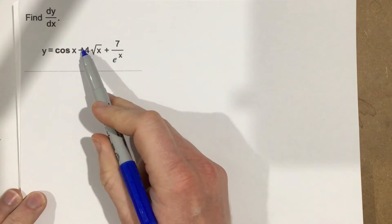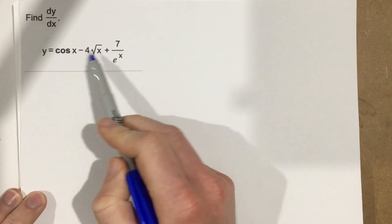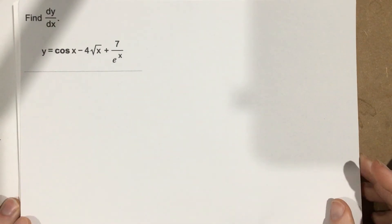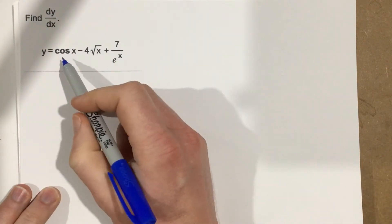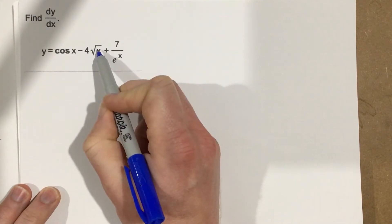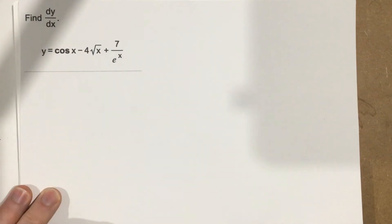Now, I have these separated by subtraction and addition so I can apply the derivative individually to each piece. I don't need any of the rules, like the product rule, the quotient rule here. But I want to rewrite this so that this is in exponent form and this would be in an exponential form.